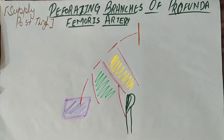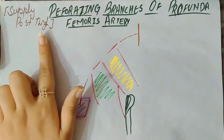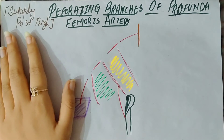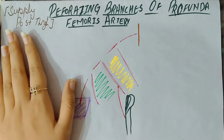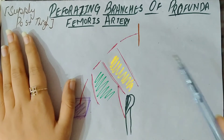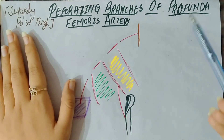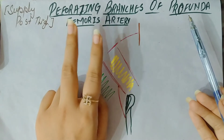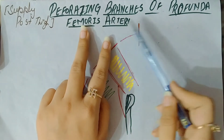Hello guys, welcome back to my channel. In this video we'll learn about the blood supply, or the arterial supply, of the posterior compartment of the leg. This is by the perforating branches of the profunda femoris artery. The profunda femoris artery is itself a branch of the femoral artery, which we covered in the anterior compartment blood supply. The profunda femoris artery also gives two more branches: the lateral circumflex femoral artery and the medial circumflex femoral artery.